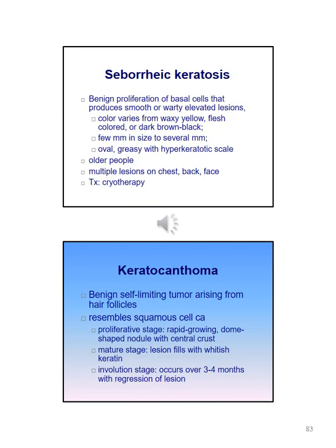Seborrheic keratosis is a benign proliferation of the basal cells that produces smooth or warty elevated lesions. The color varies from waxy yellow to flesh-colored to dark brown or black, a few millimeters to several millimeters in size, oval and greasy with a hyperkeratotic scaly look, usually on older people. Multiple lesions can be found on the chest, back, and face. Treatment is cryotherapy.